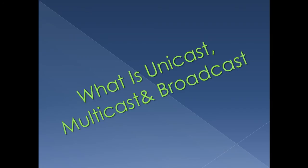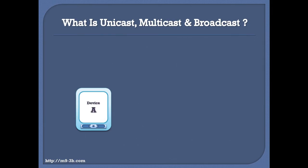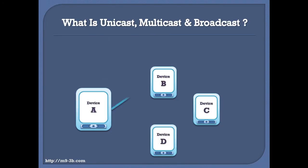Let's say that we have four devices that are in the same network: Device A, B, C, and D. If device A is transmitting a message to device B only, then the way of transmission used here is called Unicast. So, Unicast is the process that involves two devices only, where one device is transmitting to another device.